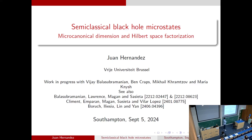I'll be talking about this project on semi-classical black hole microstates, and in particular how to use them to count the microcanonical dimension in gravity, as well as some of its applications to show Hilbert space factorization in gravity. This is based on work in progress with collaborators at UPenn as well as UB, and it is also very heavily based on these other projects.